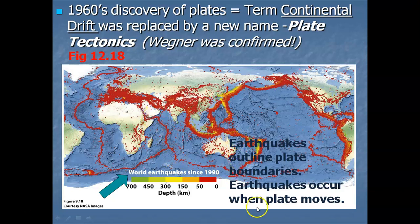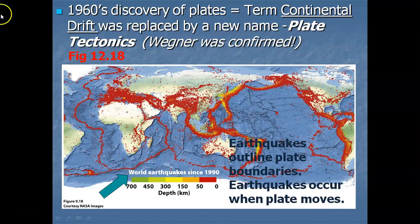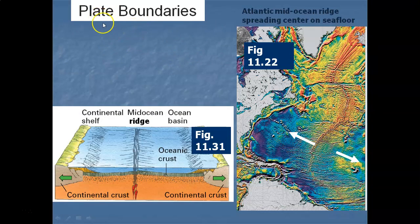Wagner's theory was finally confirmed. At the time he didn't have the technology to prove how the continents drifted apart, but now we know. The name was then changed from the theory of continental drift to the theory of plate tectonics, which is what we call it today.